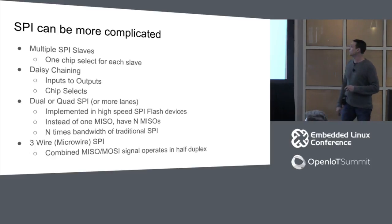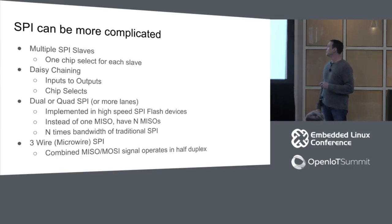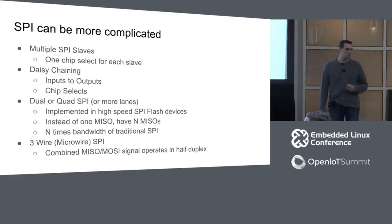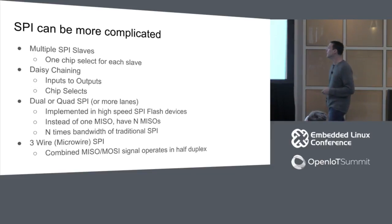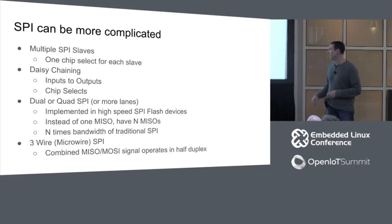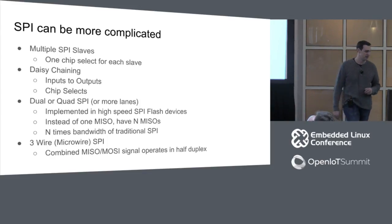Flash started originally as single-lane, and now instead of one MISO line you can have N — dual or quad MISO lanes typically in those devices, giving you N times bandwidth on reads, which is the fast path they're trying to optimize. Then we have the microwire three-wire variant — the one I promised, where MISO and MOSI are combined on the same line for half-duplex operation.